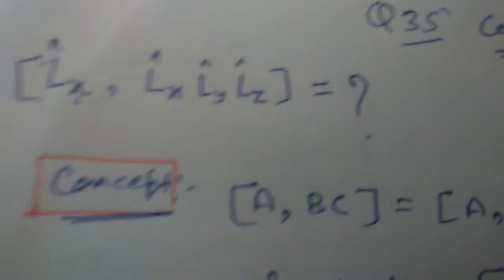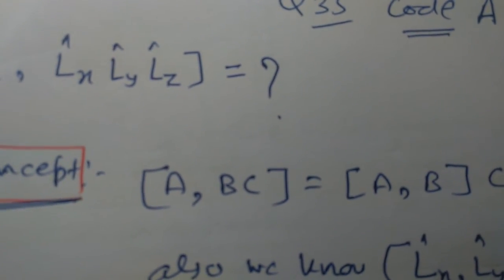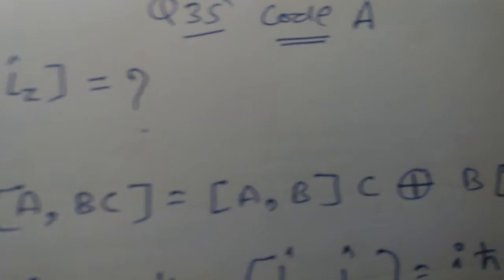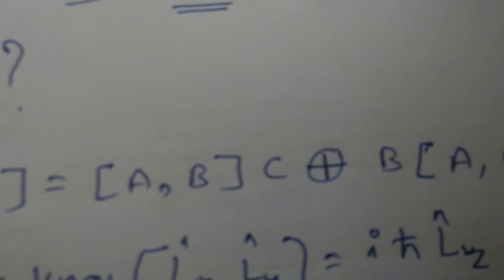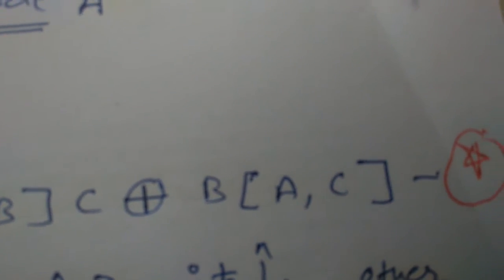The basic concept is [A, BC] commutator is equal to [A, B] commutator times C, plus B times [A, C] commutator.